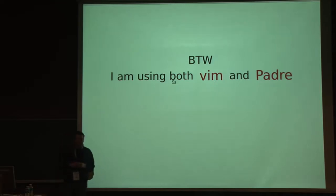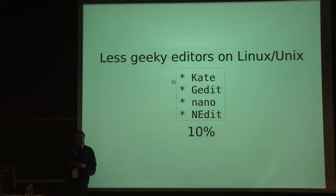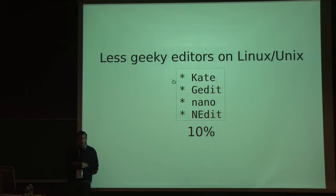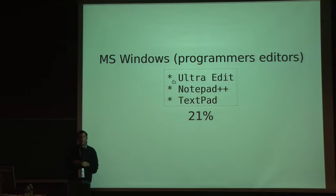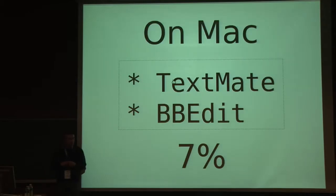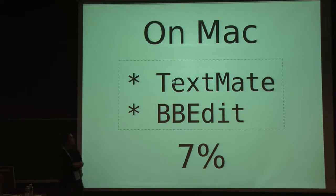By the way, I am a Vim user and a Padre user, which probably puts me in the slash somewhere. In the poll we saw that there are a couple of other less geeky editors for Linux and Unix, and they got about 10% of the vote. On Microsoft Windows there are the so-called programming editors — some of them commercial, some shareware, some open source — and they got 21% of the vote. On Macintosh, you have two editors that got 7% of the vote. As I understand, they are the best thing on Earth, just after Belgian chocolate.